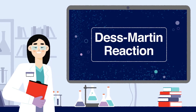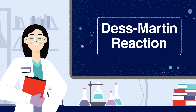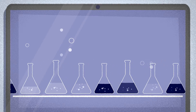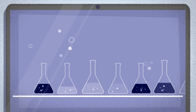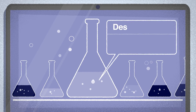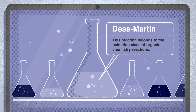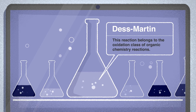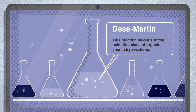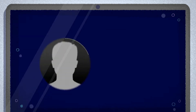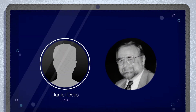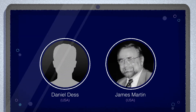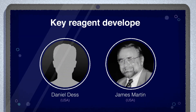First, a few facts. The Des-Martin reaction belongs to the oxidation class of organic chemistry reactions. It's named after the American chemist Daniel Des and James Martin, who developed its key reagent in 1983.